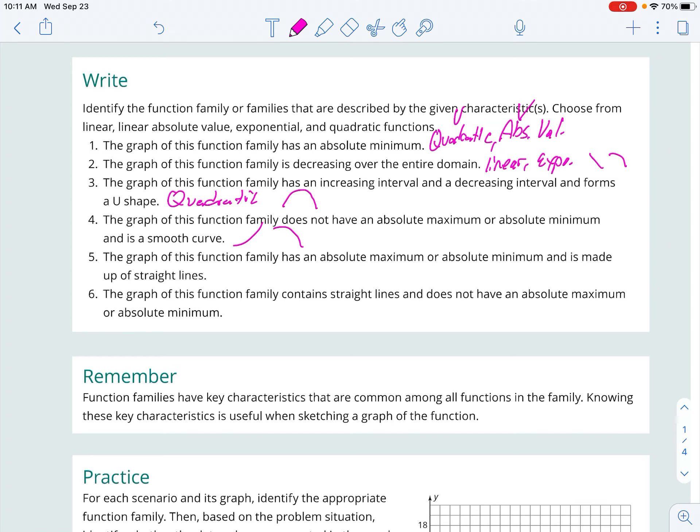The graph of this family does have an absolute max or min and is made up of straight lines. So that's my absolute value. I should have wrote exponential here. And this is my absolute value. Two lines to make up then that absolute value, V-shape graph.